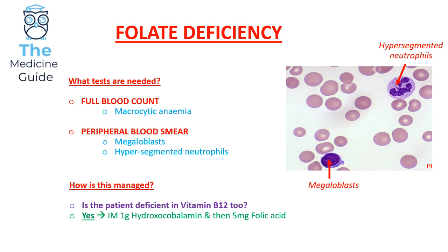To clarify: we would offer the patient intramuscular hydroxycobalamin to alleviate the B12 deficiency. When B12 levels have returned to normal, we would then offer the patient five milligrams of folic acid to alleviate the folate deficiency. Otherwise, this could lead to subacute combined degeneration of the spinal cord.